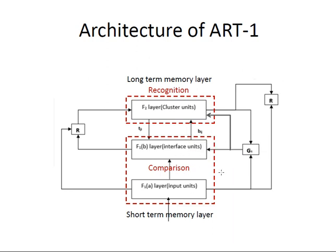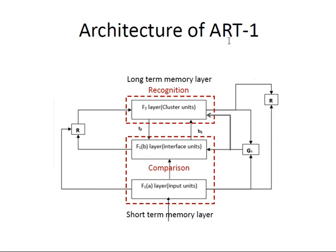This system is used in ART1. In slow learning, when weight change occurs very slowly during a trial, ART2 is used in place of ART1.